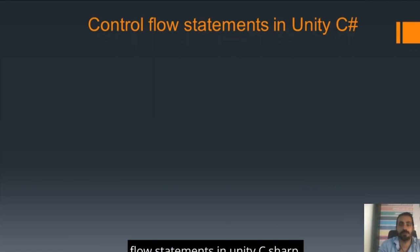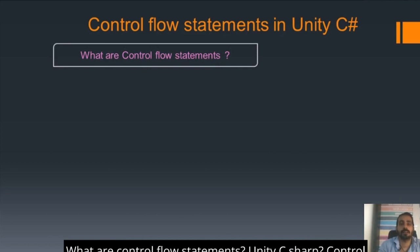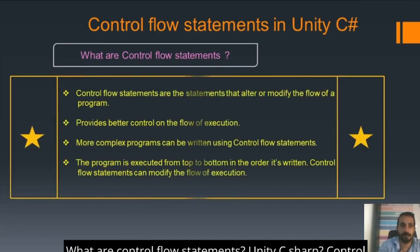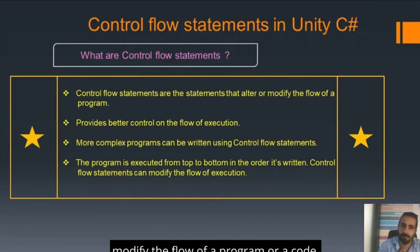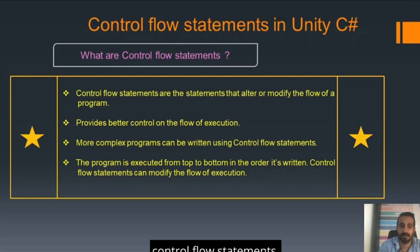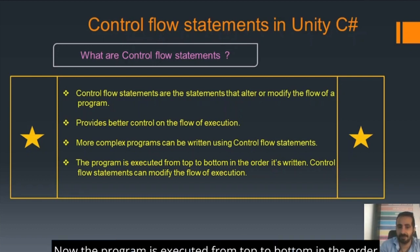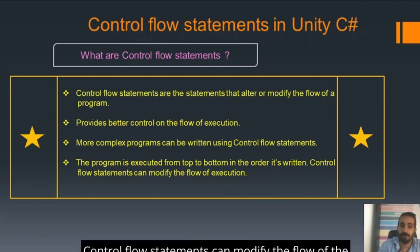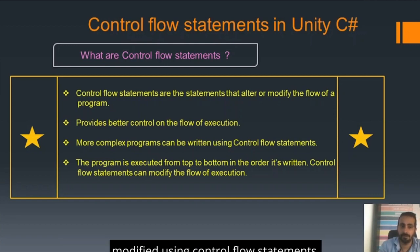In this session, we are going to learn about control flow statements in Unity C-sharp. Control flow statements are the statements that alter or change or modify the flow of a program or a code. It provides better control on the flow of execution of a code. More complex programs can also be written using control flow statements. The program is executed from top to bottom in the order it's written, and control flow statements can modify that flow.